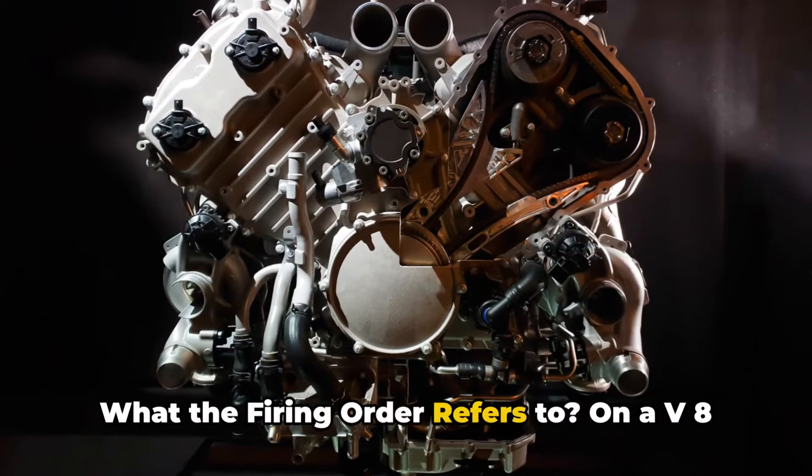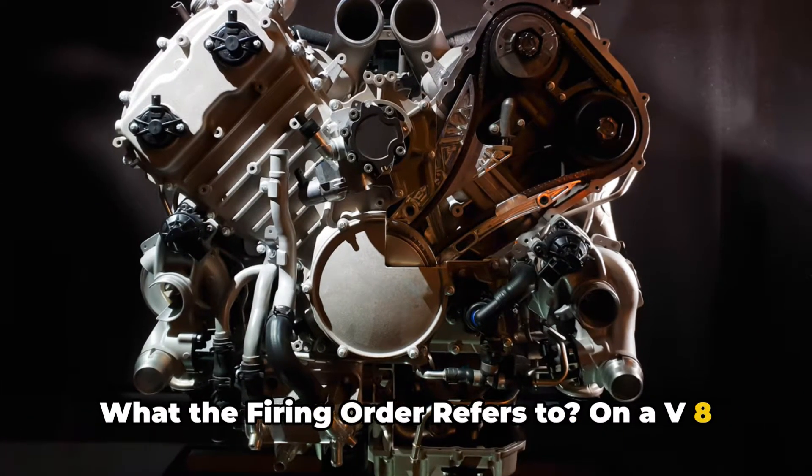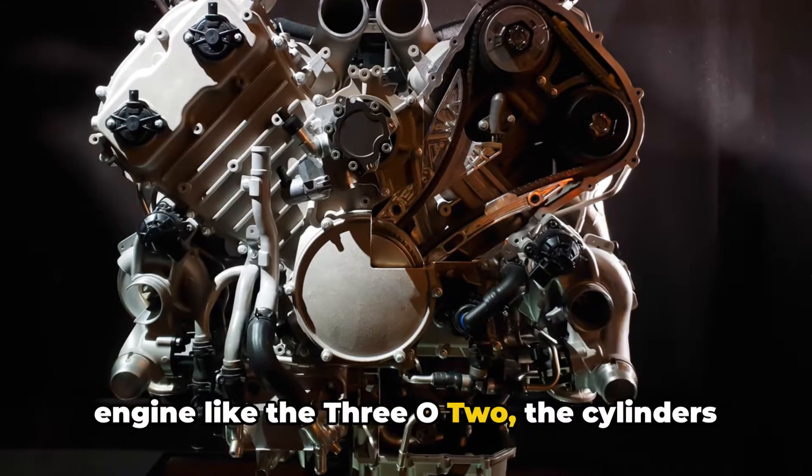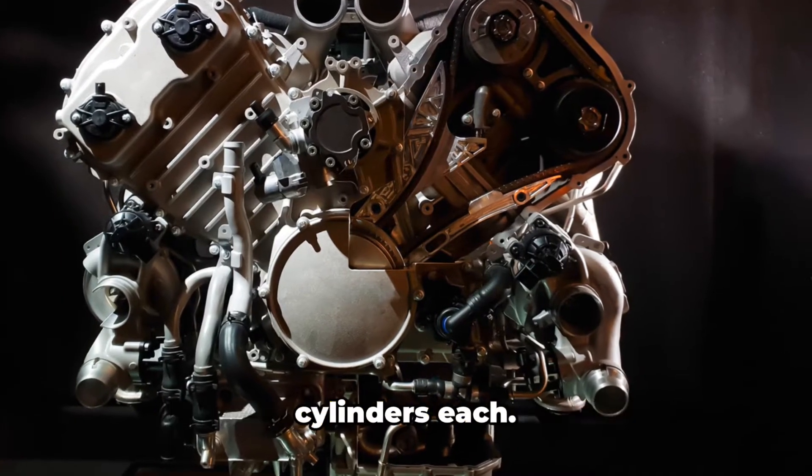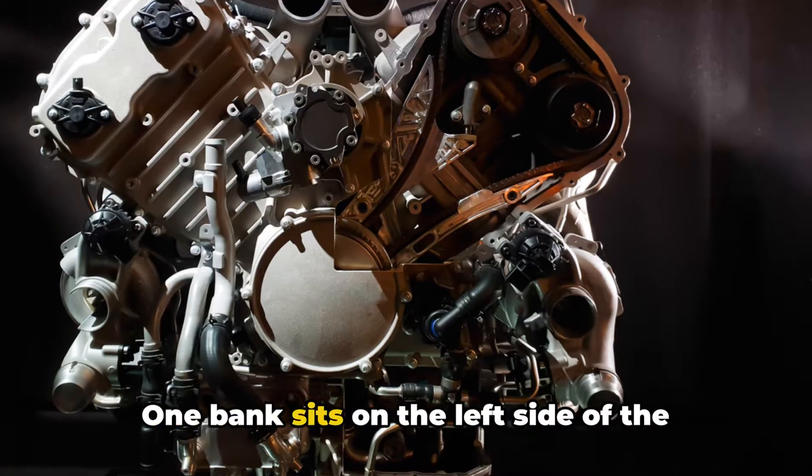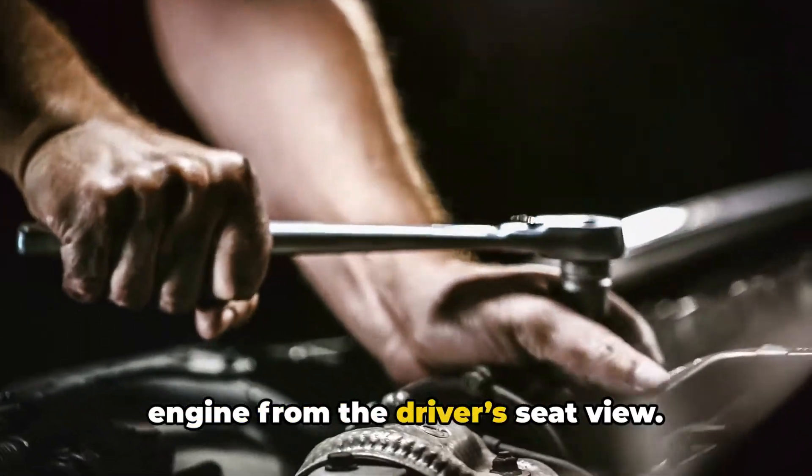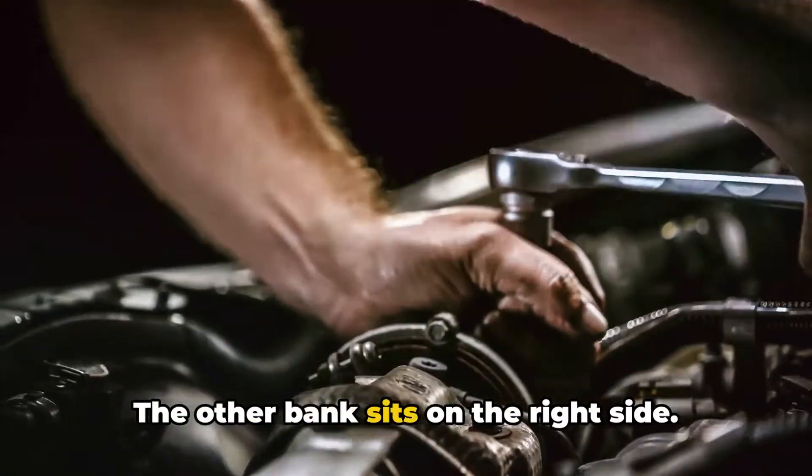On a V8 engine like the 302, the cylinders are arranged in two banks of four cylinders each. One bank sits on the left side of the engine from the driver's seat view, the other bank sits on the right side.